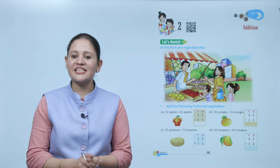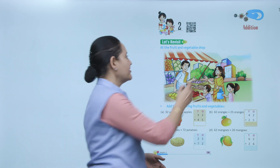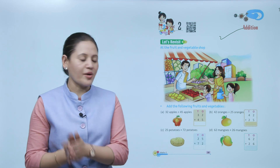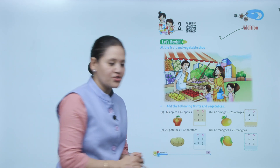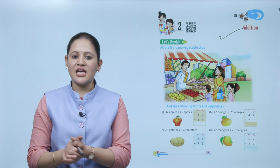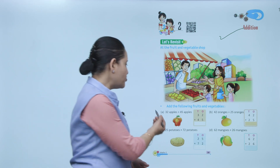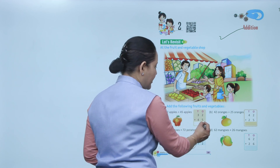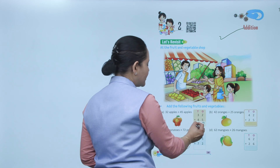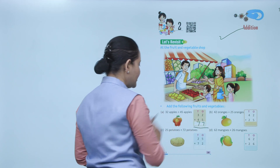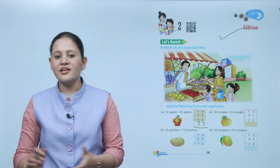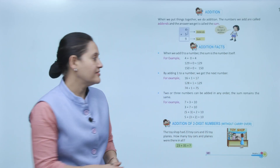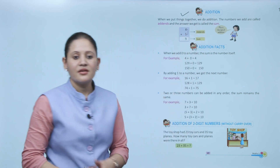Hello kids, welcome to today's math class. Today we'll do addition. Let's revisit the fruit and vegetable shop. We'll add the following fruits and vegetables: 32 apples and 45 apples. If we add them together, start from ones — 5 plus 2 is 7, 4 plus 3 is 7. Total is 77.